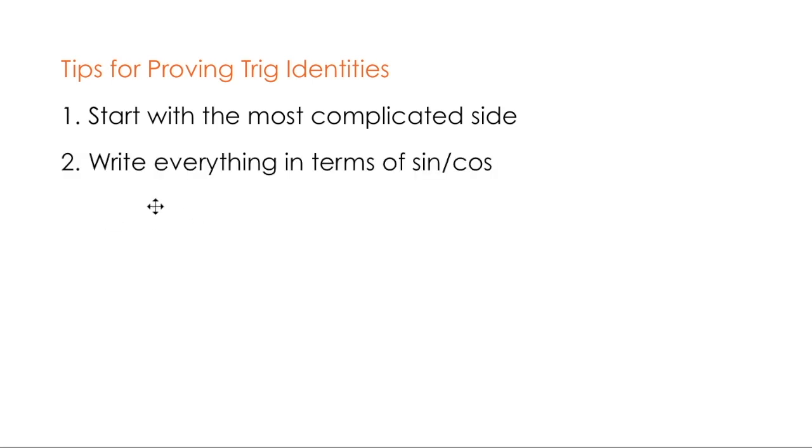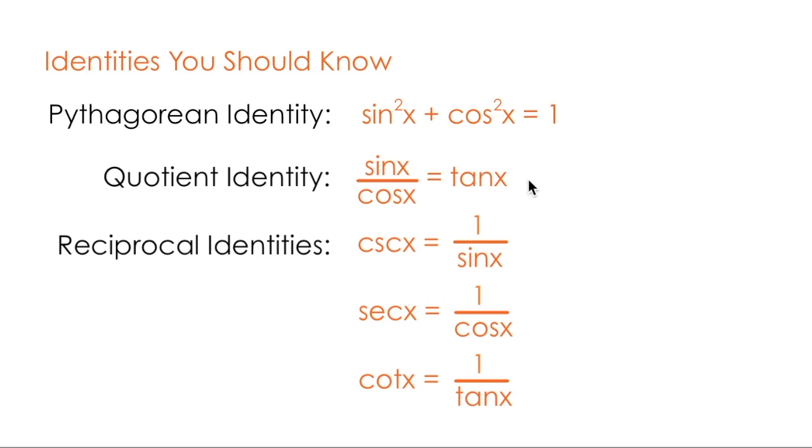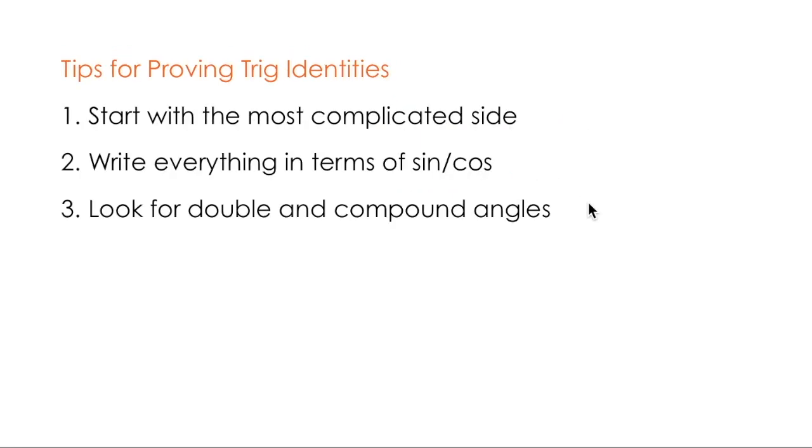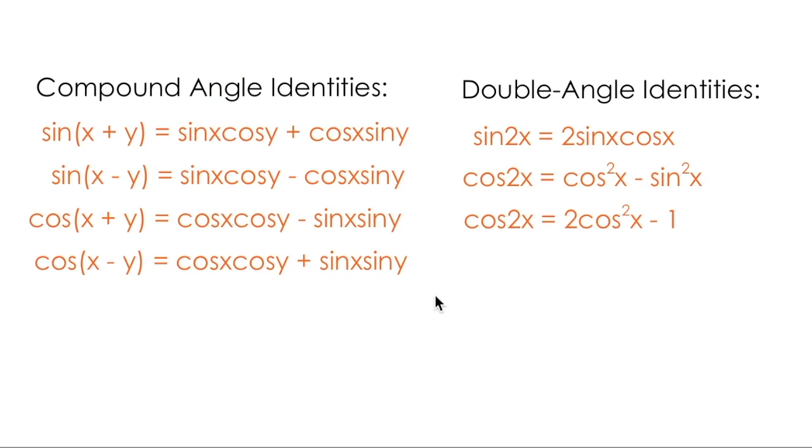The second thing is to write everything in terms of sine and cos. Usually this involves using the quotient or the reciprocal identities, which will make your life much easier. The third thing I can suggest is look for double and compound angles. Usually when you find these in your trig identity problems, your expression gets much worse before it gets better, but that's kind of true for most identity problems anyways.